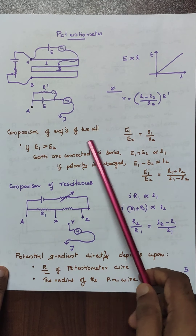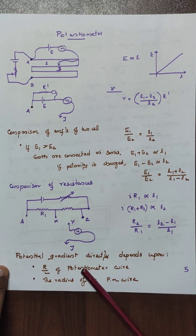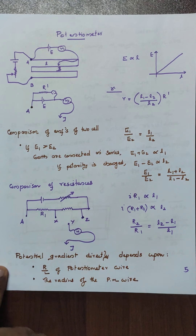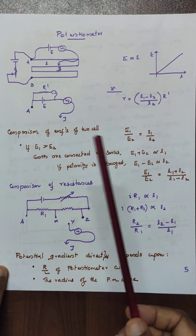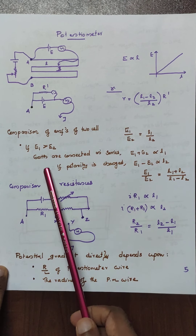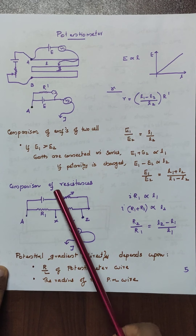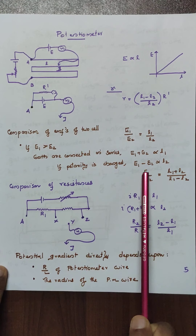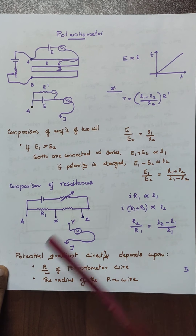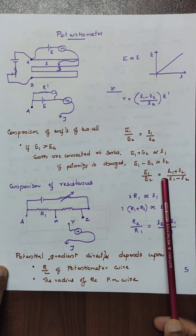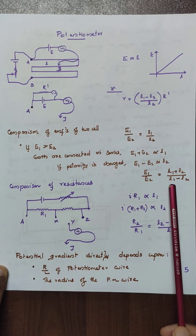Keep in mind the comparison of EMF of two cells — a very important concept. We change the secondary network to introduce E1 and E2. Then E1 by E2 equals L1 by L2. In another situation, if both cells are connected in series with balance length L1, and if the polarity is interchanged giving L2, then E1 by E2 equals L1 plus L2 by L1 minus L2.